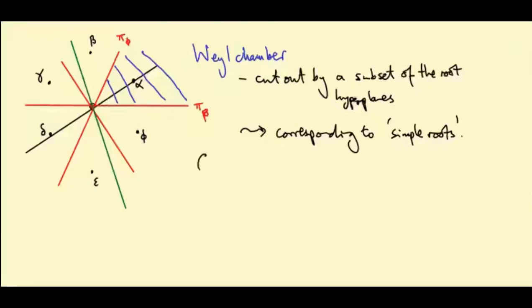So first claim, which I will defer the proof until a later video, is that the number of simple roots, having made this choice, is equal to the dimension of the space Rⁿ that we're working in.